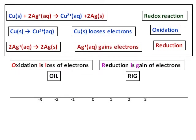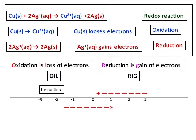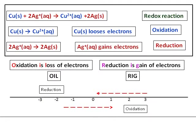Another way of remembering is to use the number line. If the oxidation number goes towards the negative side, it is reduction. If the oxidation number goes towards the positive side — for example, from 0 to 1 or negative 1 to 1 — it is oxidation. So remember, either OIL RIG or the direction the number goes on the number line will help you predict whether it is oxidation or reduction.